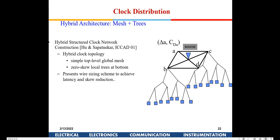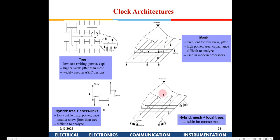You can have a hybrid of mesh and tree — a mesh at the top level with a tree at each node. To summarize the topologies: a pure H-tree network is low cost, higher skew, and widely used in ASIC design. A hybrid tree with cross-links is also low cost with slightly reduced jitter compared to pure H-tree but is difficult to analyze.